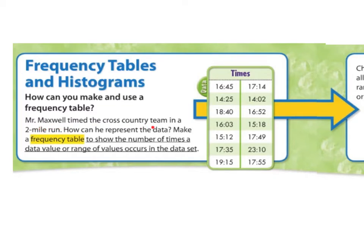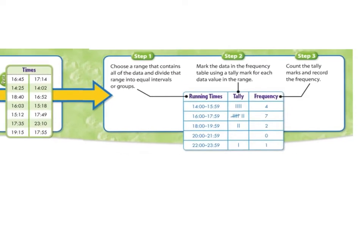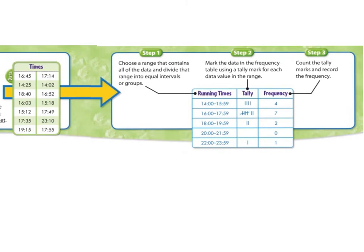Mr. Maxwell timed the cross-country team in a two-mile run. How can he represent the data? Make a Frequency Table to show the number of times a data value or range of values occurs in a data set. So first when we make data or collect data, we're going to get it in a kind of table like this. But we're going to try to put it into a Frequency Table. I'm going to show both of these at the same time, my data and then our Frequency Table.